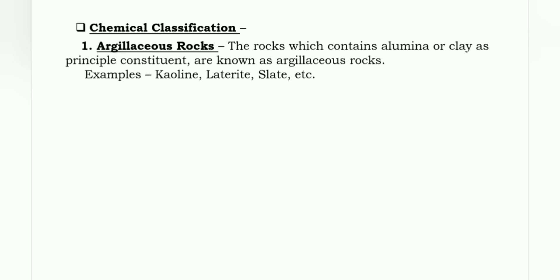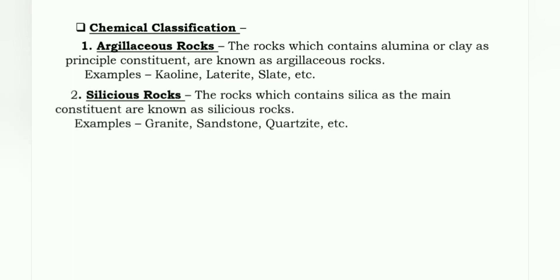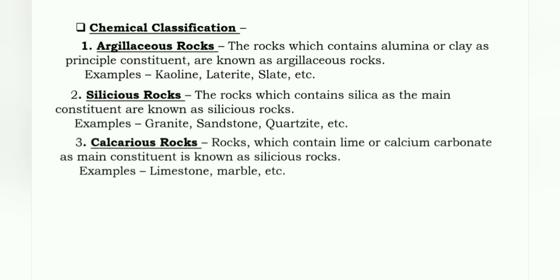Next is chemical classification. First, argillaceous rocks: the rocks which contain alumina or clay as the principal constituent are known as argillaceous rocks. Examples: kaolin, laterite, slate, etc. Second, siliceous rocks: the rocks which contain silica as the main constituent are known as siliceous rocks. Examples: granite, sandstone, quartzite, etc. Third, calcareous rocks: rocks which contain lime or calcium carbonate as the main constituent are known as calcareous rocks. Examples: limestone, marble, etc.